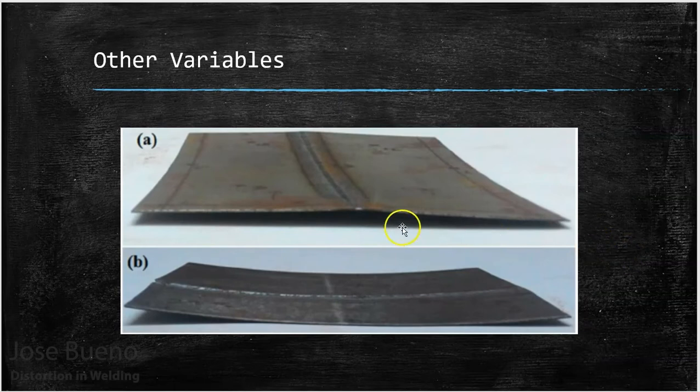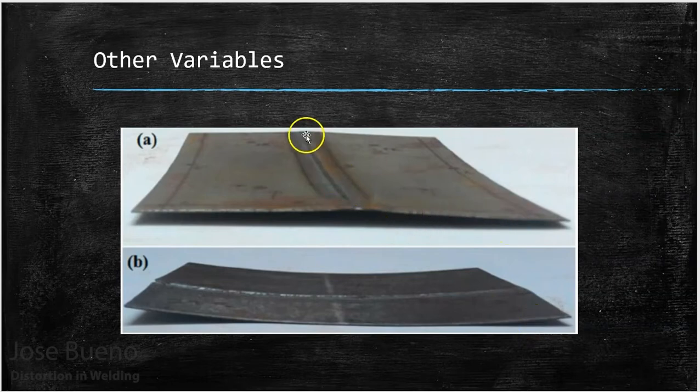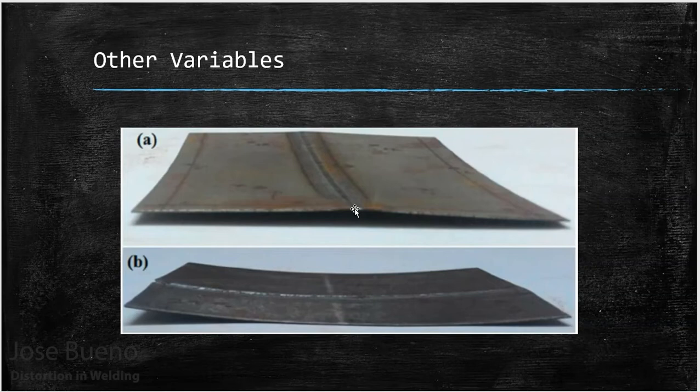Here we have an example of some really thin sheet metal being welded. Even though the travel speed and current were just right, because the metal was very thin, the distortion is going to be a lot more present than it would be in thicker metal. So what are some things we can think about to prevent that distortion?